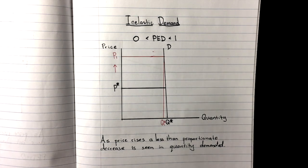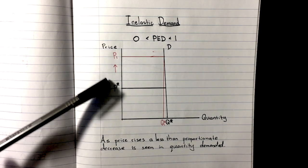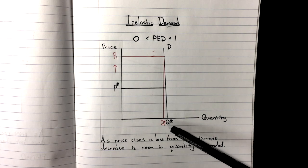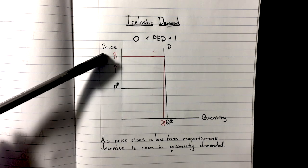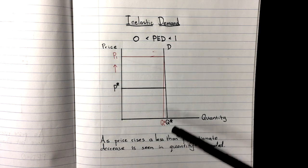And what that means is when we have a change in price or an increase in price from P star to P1, we'll see a less than proportionate change in quantity demanded, which means that if price were to increase by 50%, we would see a less than 50% change in quantity demanded.